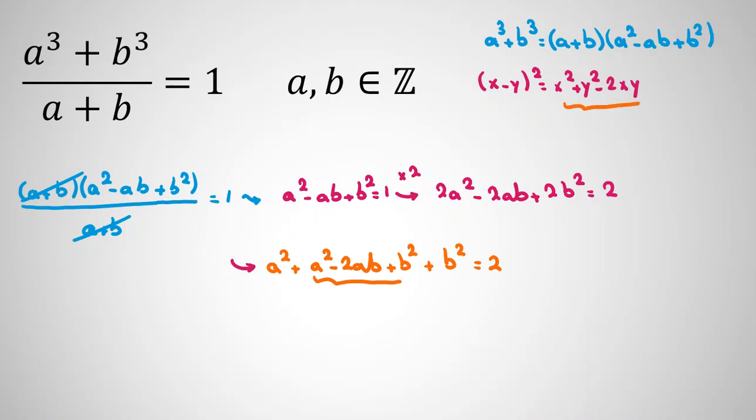This part is exactly equal to A minus B squared. So it will be A squared plus A minus B squared plus B squared equals 2.